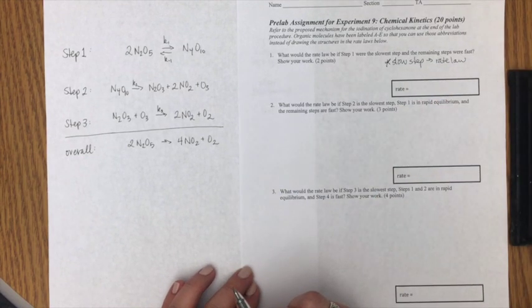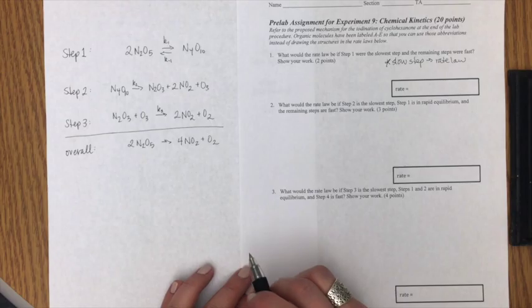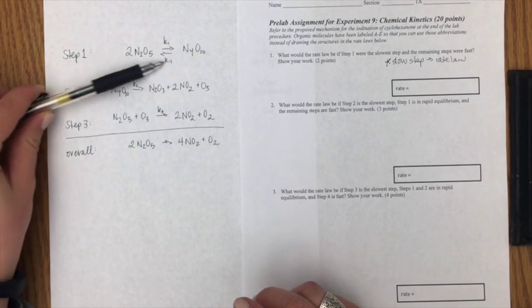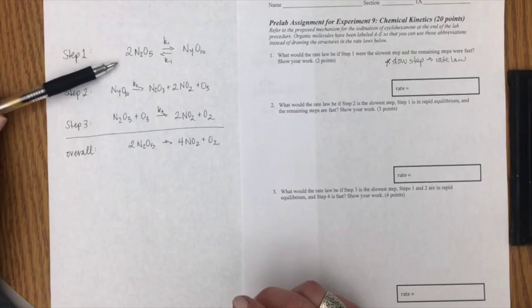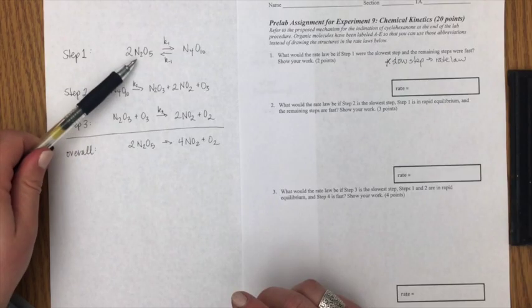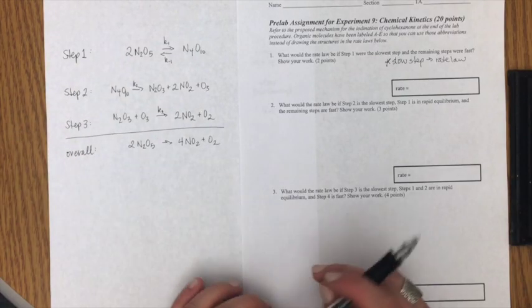And the other thing that we need to know is that we can break these things down into what we call elementary steps. In other words this first reaction we can treat it as an elementary step meaning that my rate law is expressed very simply. I multiply the rate constant times the concentration of the reactants raised to their stoichiometric coefficients.